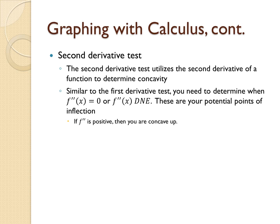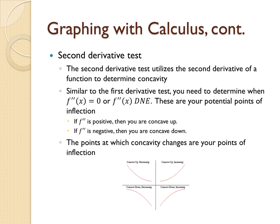Instead, let's call these potential points of inflection. The testing criteria are: first, if f'' is positive, then you are concave up in that interval; second, if f'' is negative, then your function is concave down over that interval. Once you have determined the concavity over an open interval, you can find points of inflection by looking at where your concavity changes — at that point of change is where you have a point of inflection.